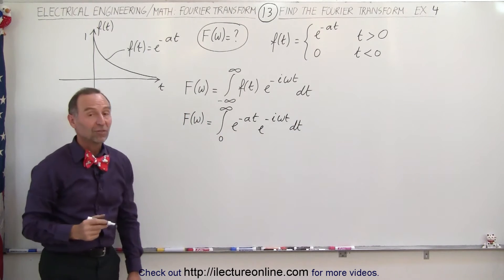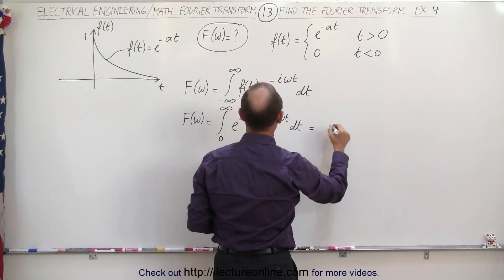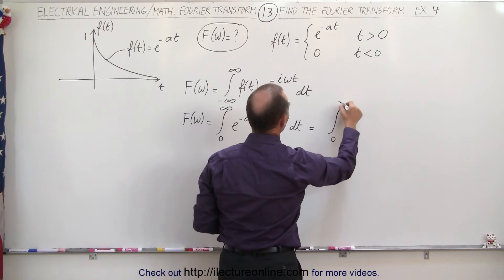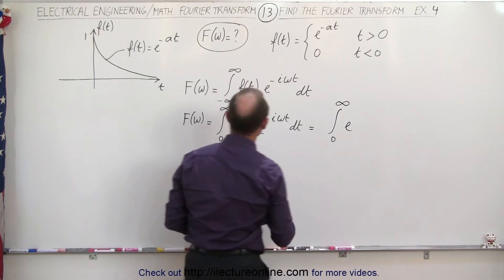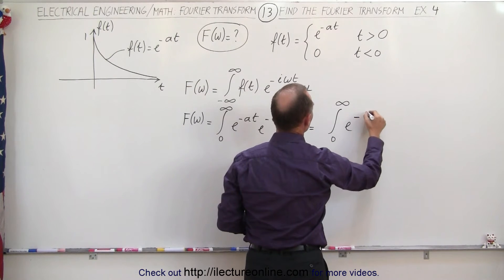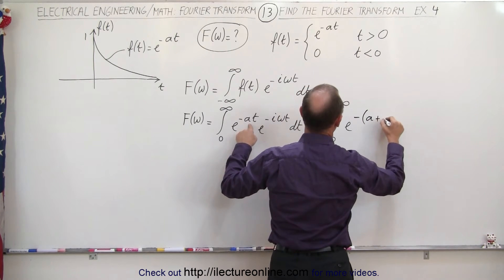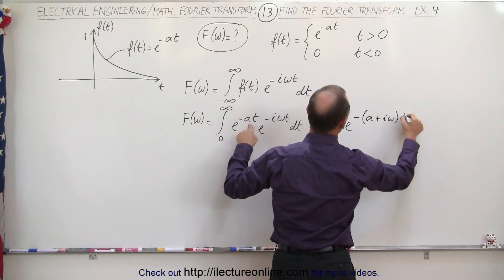So that means, since the bases are the same, we can add the exponents. So this becomes equal to the integral from zero to infinity of e to the - we can pull out a negative sign,